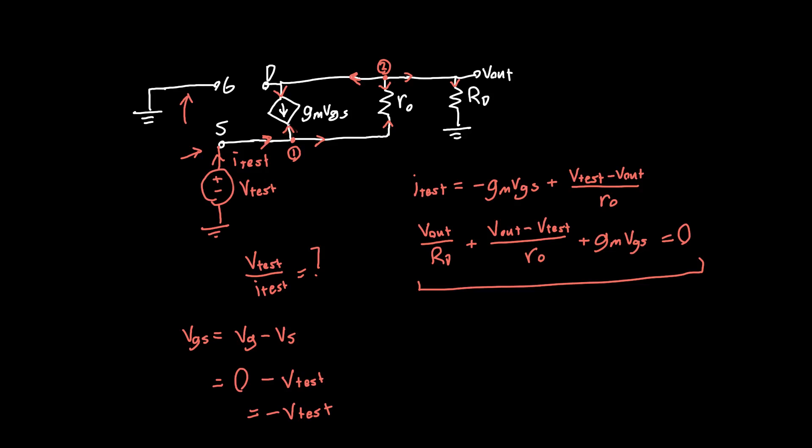We can substitute that into each of these equations. I'm just going to do that by erasing things and writing them back in. If we replace VGS with minus V test, this term becomes positive GM V test. And if we replace VGS in our other equation, this becomes minus GM V test, because in both cases, we're flipping the sign.